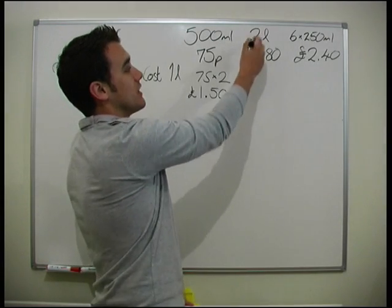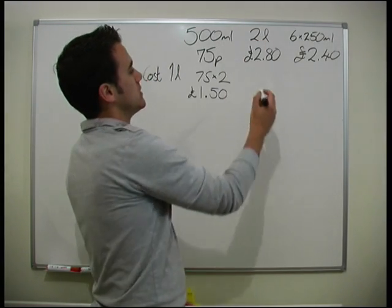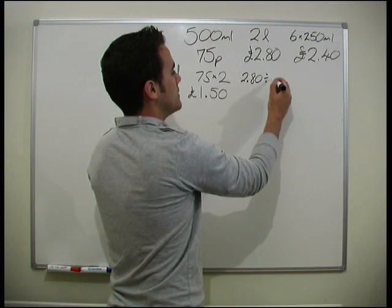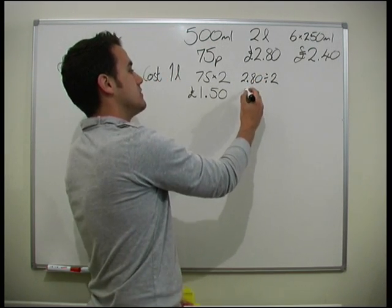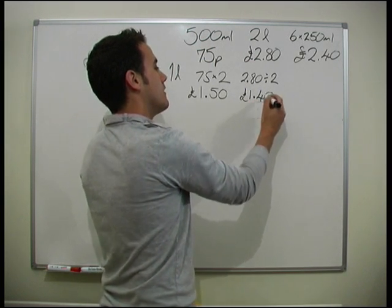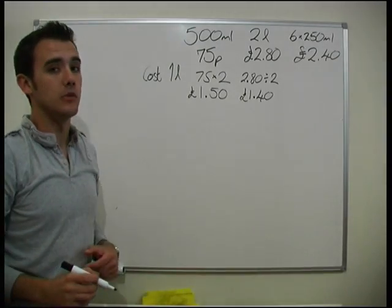2L, what are we going to do to get 2L to 1L? We divide by 2. So in this case we do £2.80 divided by 2, and that's going to give us £1.40. So this is leading at the moment.